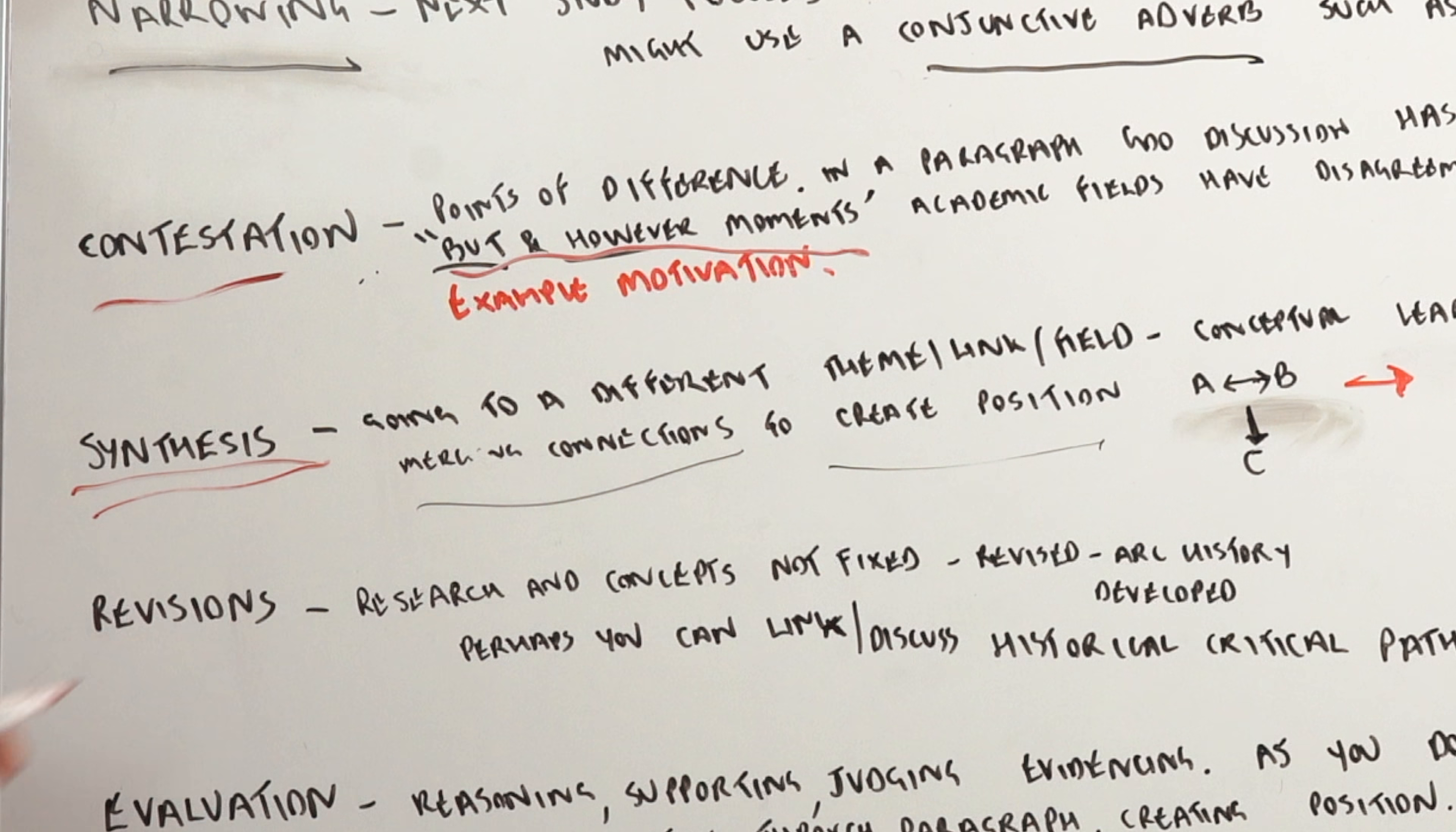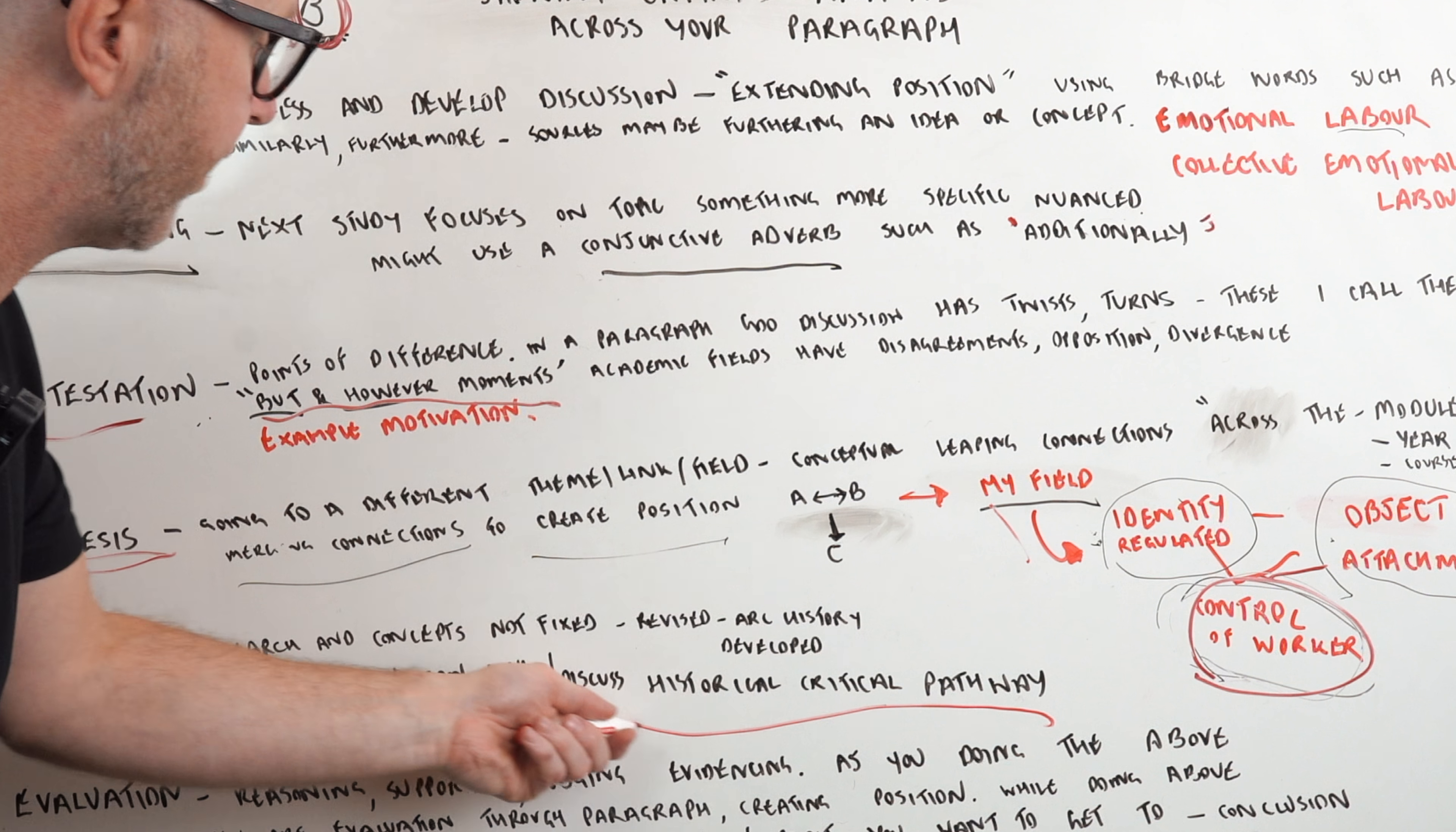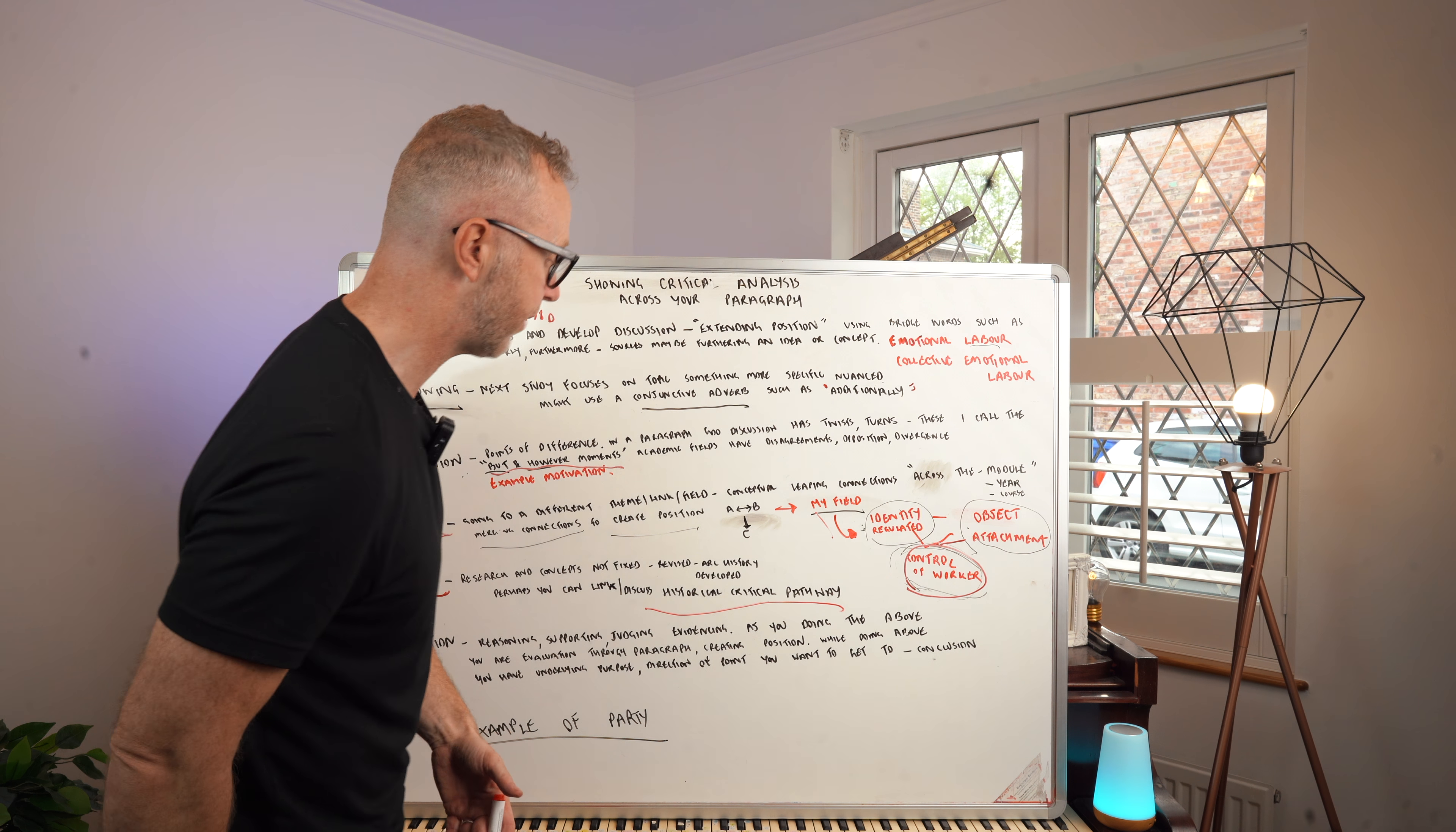Fifth one I want us to think about is revisions. Any academic field that you're going to be talking about in your assignment, it's not static, it's not fixed. Actually it's always changing. There's an historical kind of difference and development to the discussions that academics are having. If you can find out that historical critical pathway, then you're able to build up critical reflection within the field. Perhaps A did a study in 1970, perhaps B did a study in 1980, and perhaps there's been some development, some difference, some progression within that field and the two studies that you can show in your paragraph.